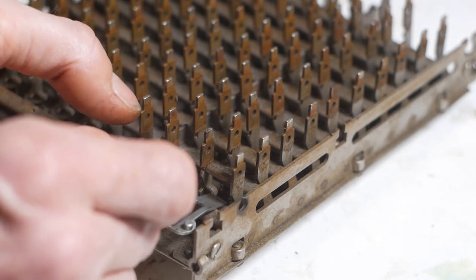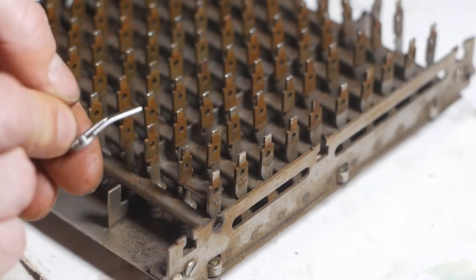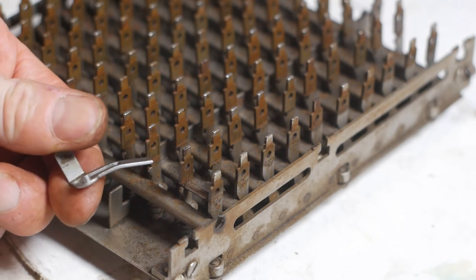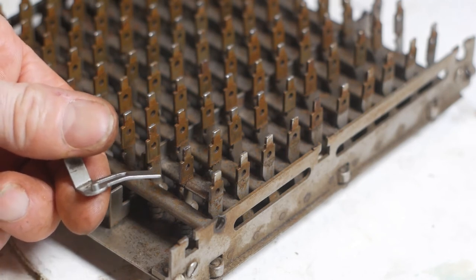The only way the plate has got bent like this is if someone has tried to dismantle the keyboard using excessive force before removing the carriage shifting rod.